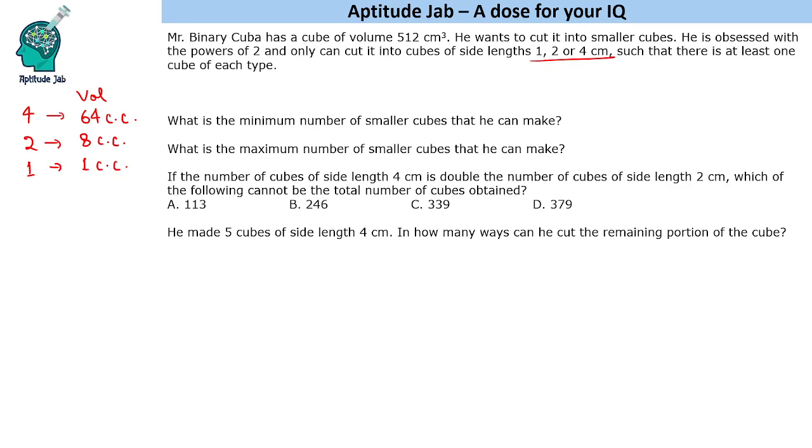If it is asked what is the minimum number of smaller cubes that he can make, he can make the minimum number of smaller cubes when he makes maximum of this type because maximum volume will be covered using the 4 cm cubes. Maximum how many he can make is, if you multiply by 8, you get 512. 64 into 8.